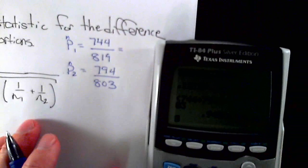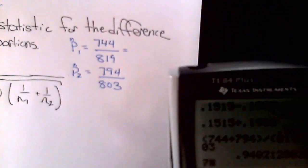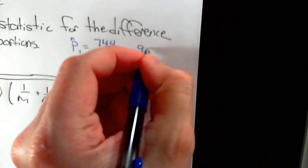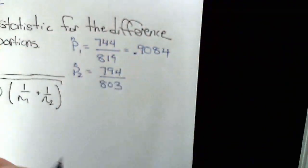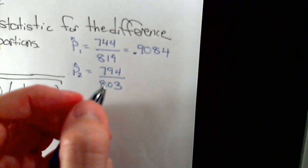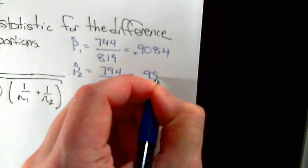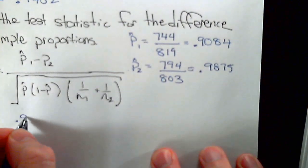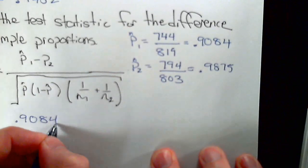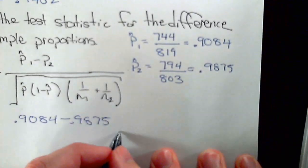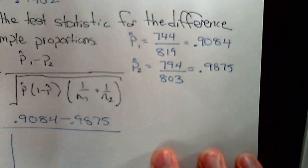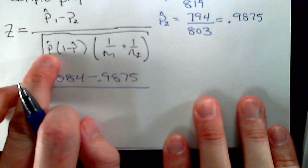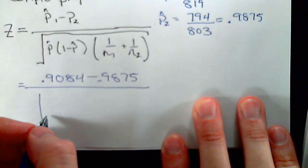Using the calculator, 744 divided by 819 we get 0.9084, and 794 divided by 803 we get 0.9875. So that's going to be the numerator, 0.9084 minus 0.9875. And then for the radicand, the part underneath the square root, this is the pooled sample proportion which is 0.9482.